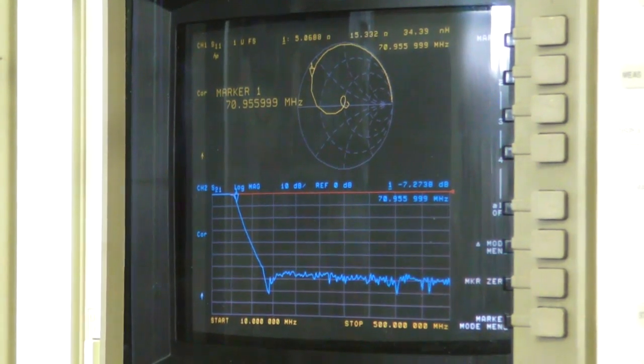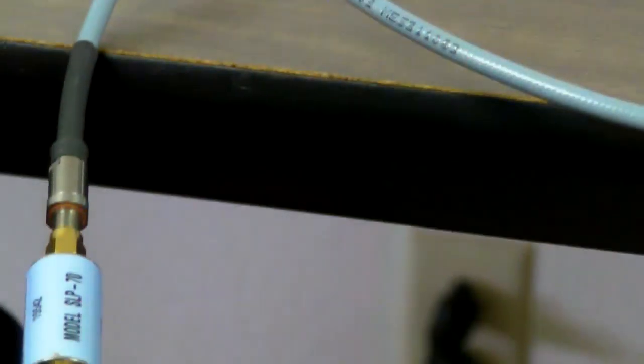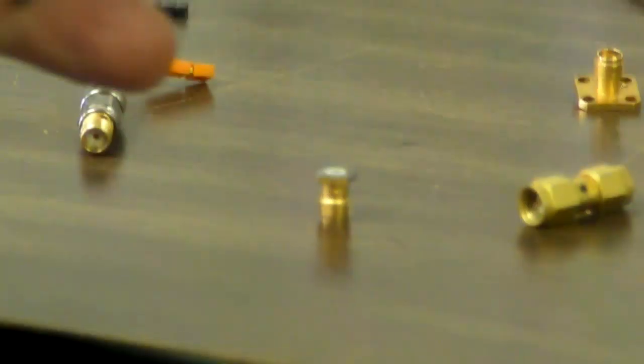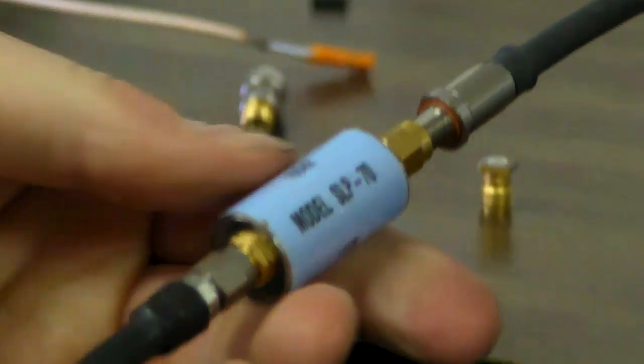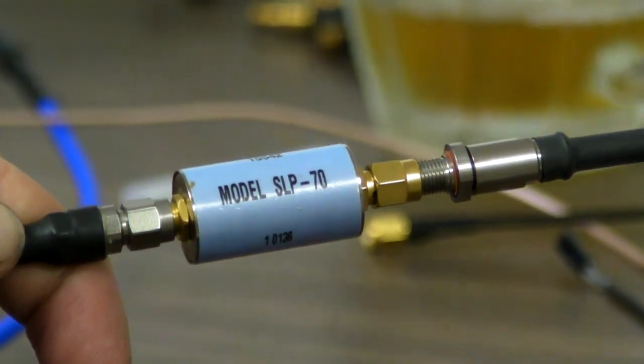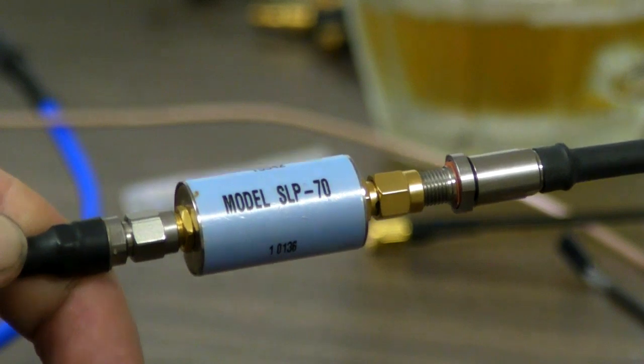This thing's behaving exactly as Harvey says it'll behave. Can you describe this filter a little better? It's a 70 megahertz low-pass filter sold by Mini Circuits. And SLP-70. It means it's got SMA connectors on it and it cuts off at 70 megahertz.